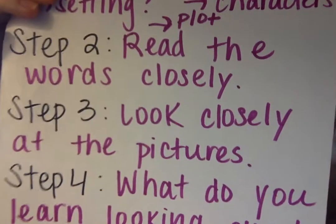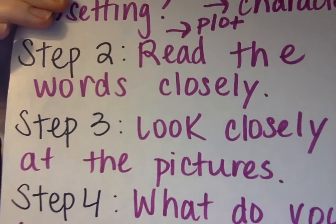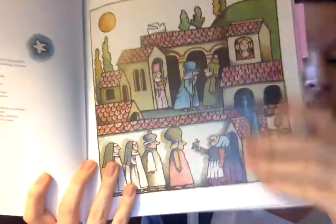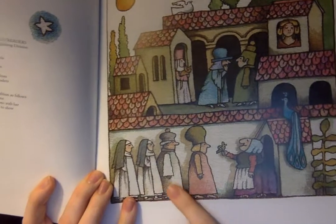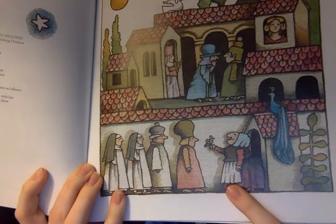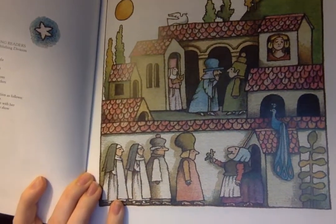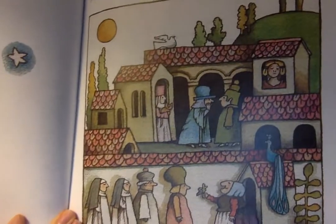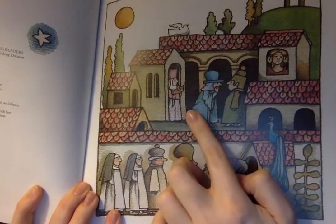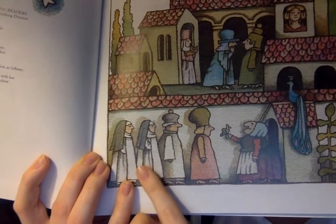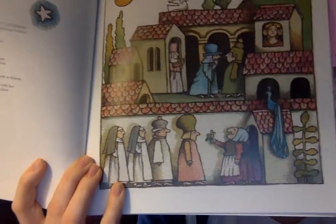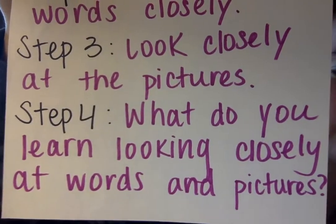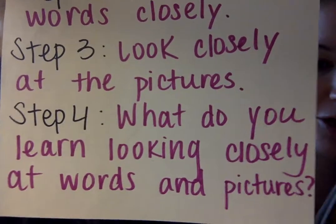Moving into step three: look closely at the pictures. The pictures here match the words. We can see all these people waiting in line to see Strega Nona, to see her perform some kind of miracle that they need from her. And even though we can see them also whispering up here, they can't even help themselves but come visit her and ask for her help. Moving into step four: what do you learn looking closely at words and pictures?